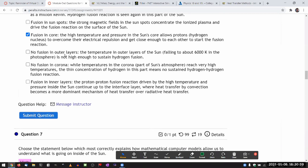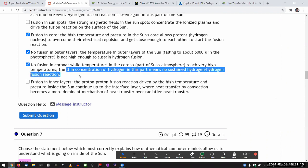No fusion in outer layers: the temperature in the other layers of the sun is not high enough to sustain hydrogen fusion. So no fusion there and no fusion in Corona. This is what I was describing.